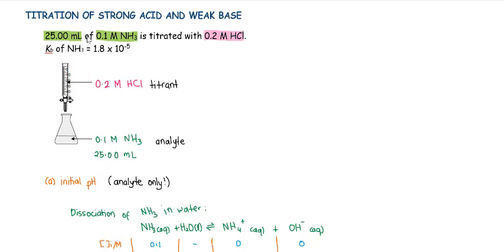In this video, we're going to look at the titration of strong acid and weak base. If you have 25 mL of 0.1 M ammonia titrated with 0.2 M hydrochloric acid, ammonia will be our analyte since we have its volume and concentration. The titrant is hydrochloric acid.